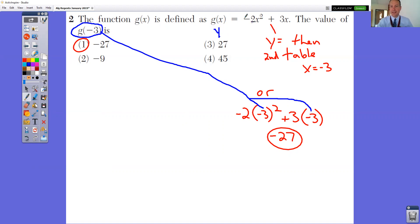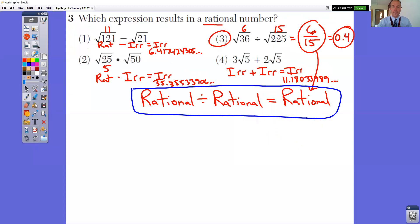So type this into your y equals and then hit second and table and see where negative 3 is. That same answer is negative 27 or choice 1.